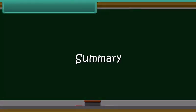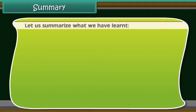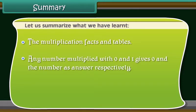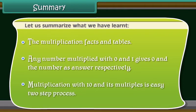Summary. Let us summarize what we have learned. The multiplication facts and tables: any number multiplied with 0 and 1 gives 0 and the number as answer respectively. Multiplication with 10 and its multiples is an easy two-step process.